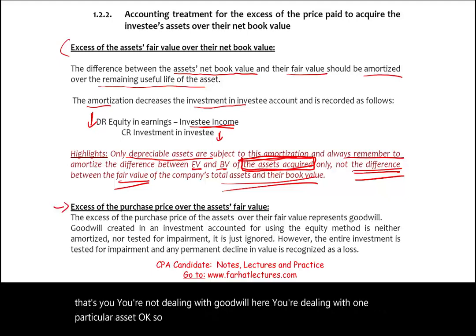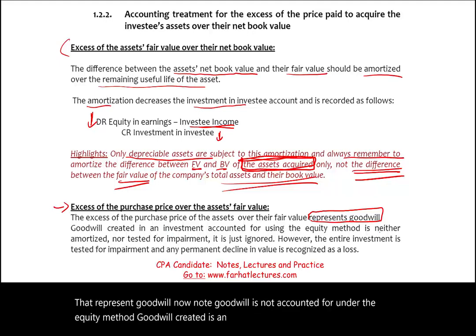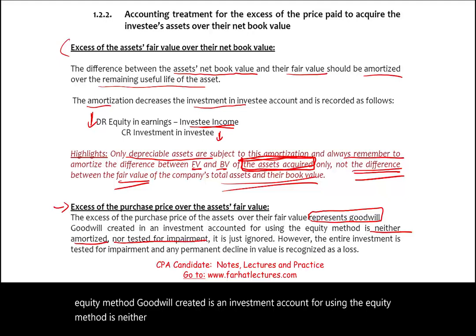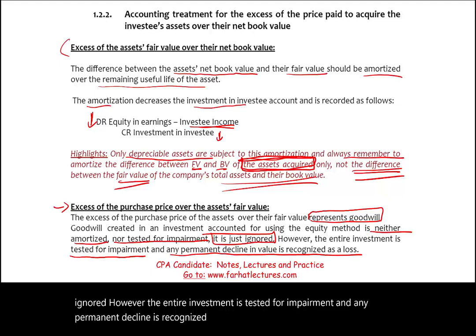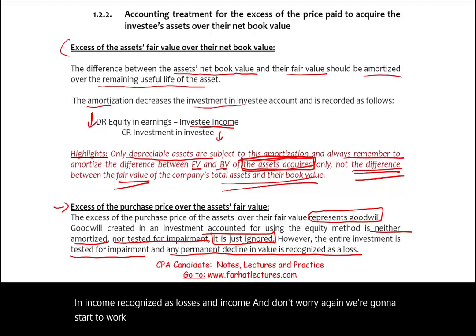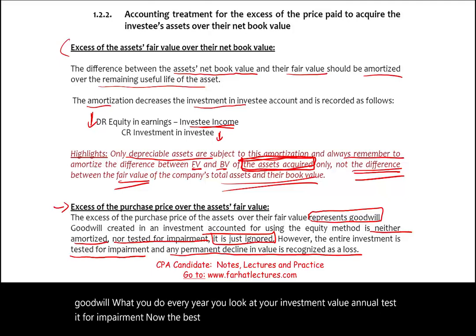If there is any excess of the purchase price over the asset fair value, that represents goodwill. Under the equity method, goodwill is neither amortized nor tested for impairment — it is simply ignored. However, the entire investment is tested for impairment, and any permanent decline is recognized as a loss in income. There is no separate goodwill account; instead, every year you look at your investment value and test it for impairment.